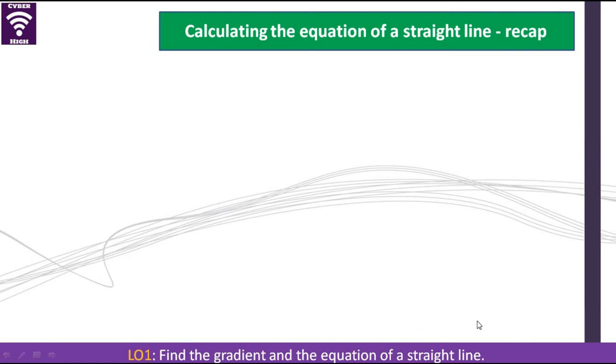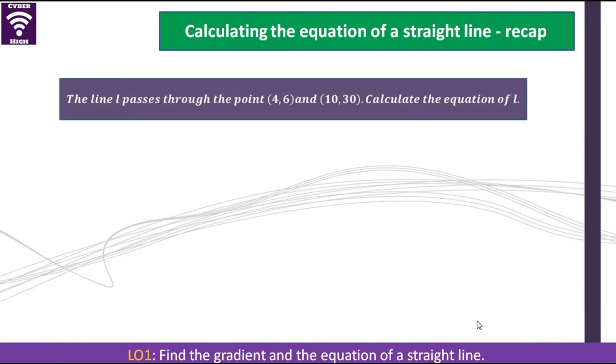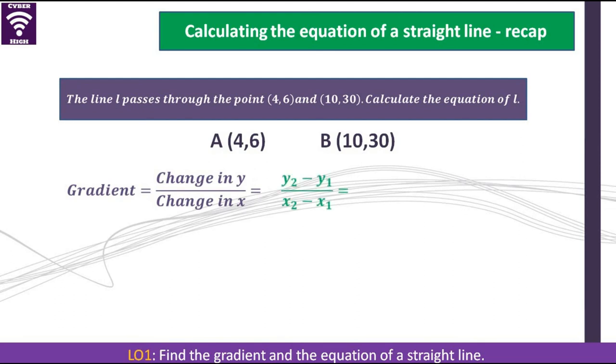In this moment, we are looking at a different scenario. We have 2 points which we have been given, 4, 6 and 10, 30. So we need to find the equation of the line L. For the same reason, we have our 2 points, and we need to find the value of m, which is our gradient. Please pause this video and quickly calculate m, and let's see how you go about with it.